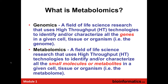Both genomics and metabolomics are fields of life science research using high-throughput technologies. In genomics, the goal is to characterize all the genes. In metabolomics, the idea is to characterize or identify all the small molecules — which includes metabolites, but increasingly people are expanding it to include many chemicals. You can do metabolomics or genomics on single cells, tissues, or organisms. In the case of metabolomics, you often do it on biofluids.